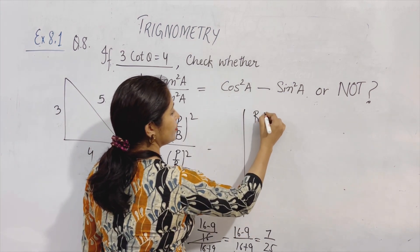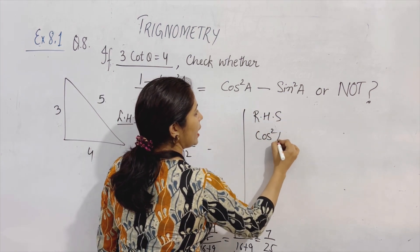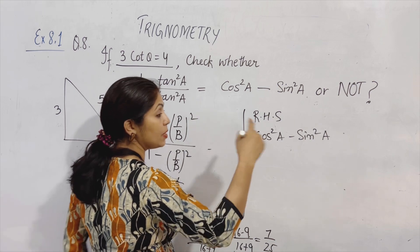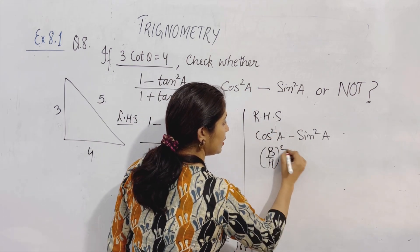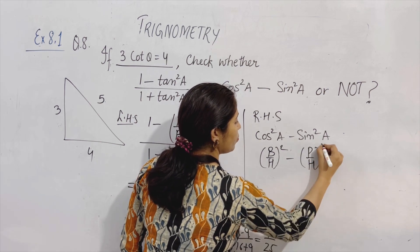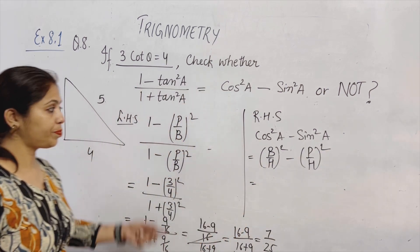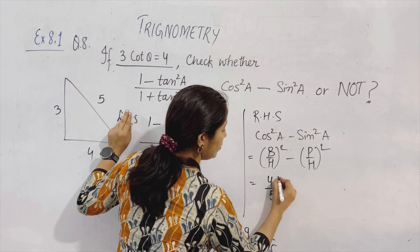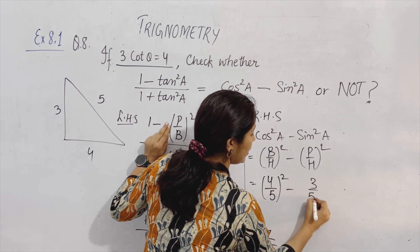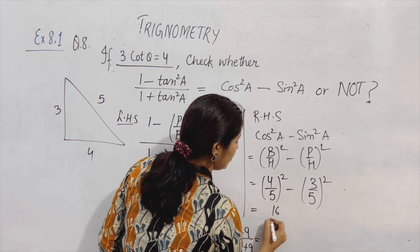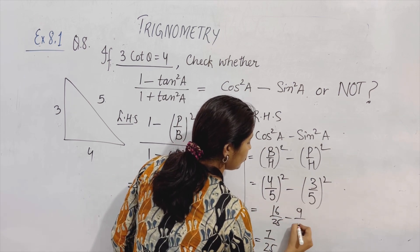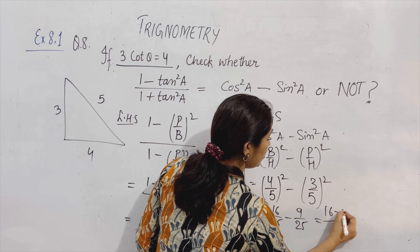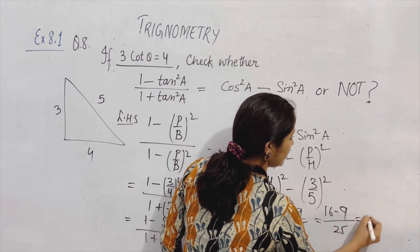Let's see what is right-hand side. Cos square A minus sin square A. Value put कर दीजिए. Cos A की value क्या है? Cos A होता है B upon H — इसका square करेंगे. और यहाँ पर sin A होता है P upon H — इसका भी square करेंगे. Figure में देखिए: B is 4, H is 5. So cos square A is 4 upon 5 square — that is 16 upon 25. Sin square A is 3 upon 5 square — that is 9 upon 25. LCM is 25. So 16 minus 9 upon 25. And answer is 7 upon 25.